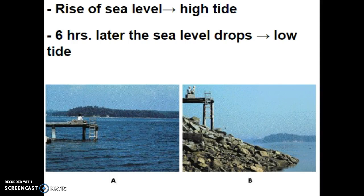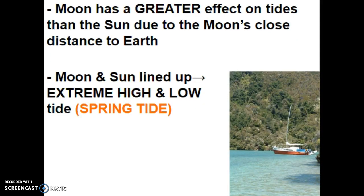The water isn't draining anywhere or being stored somewhere — it's all still in the ocean. It's just a matter of whether the gravitational pull is at its strongest, giving us high tide, or at its weakest, giving us low tide. Because the Sun is also a very large object relatively close to us, it affects our tides too, but the Moon has a greater effect because it is so close to the Earth.